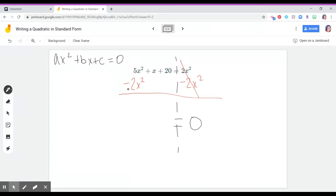So 5x squared minus 2x squared is 3x squared. Then everything else comes down. And if you want to write plus 1x plus 20, that's fine.